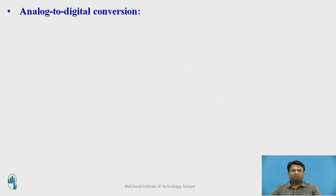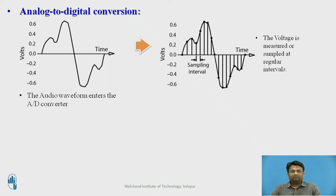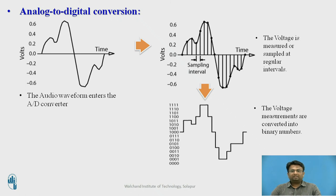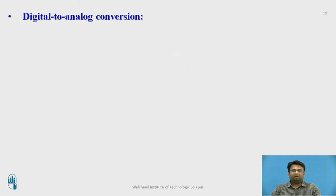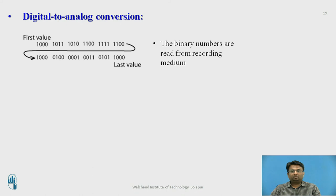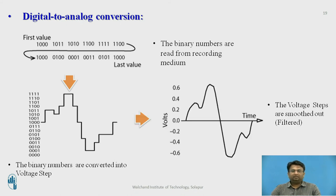The analog audio signal enters the analog-to-digital converter, is sampled at regular intervals of time, and the voltage measurements are converted into binary numbers, which are stored into the recording medium. For digital-to-analog conversion, the binary bits stored in the medium are given to the DAC, the binary numbers are converted into voltage steps, and these voltage steps are filtered, smoothed out, and given to the audio signal.